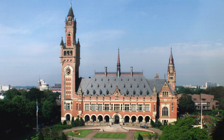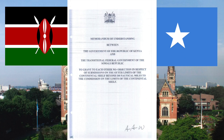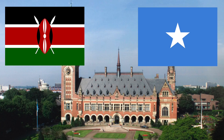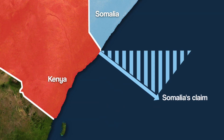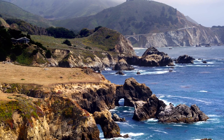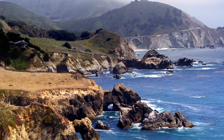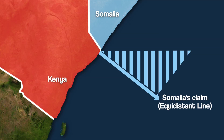Kenya would also prefer for the two countries to work it out outside of the court, citing a memorandum of understanding that each country signed in 2009, but Somalia has pushed ahead with the court case. It may look as if Somalia's claim is following the direction of the land border, but in fact this is not the basis of the claim. The direction of the land border is often ignored altogether in maritime claims and disputes. Instead, Somalia is using an equidistant line as the basis for their claim.